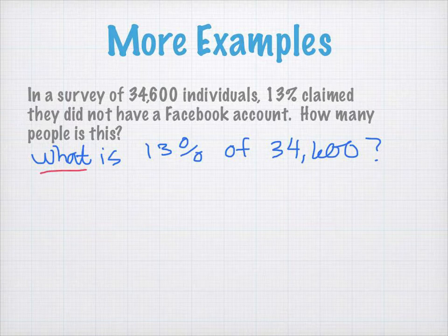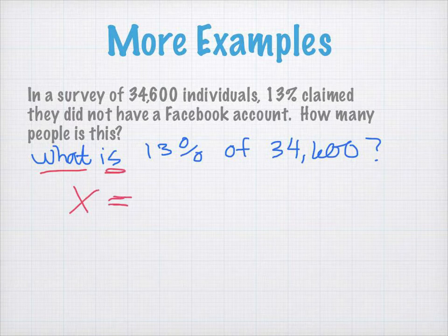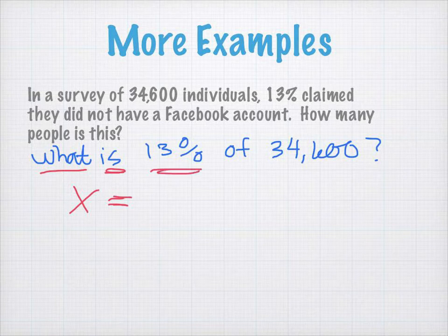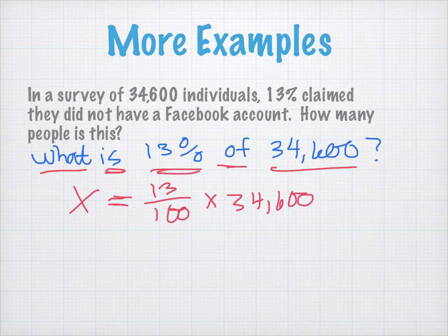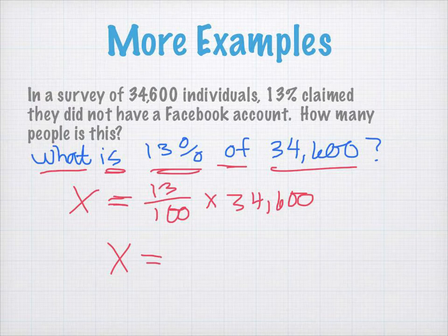What? I don't know. And when we are talking about something we don't know in an algebraic statement, we're going to represent that with a variable. So, to solve this, I just multiply 13 over 100 times 34,600. I get 4,498.